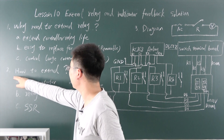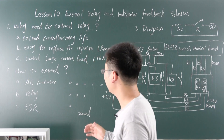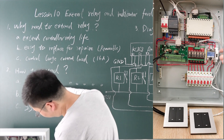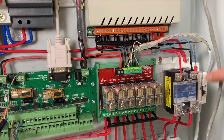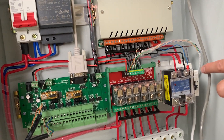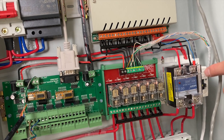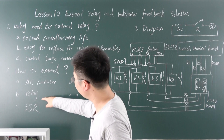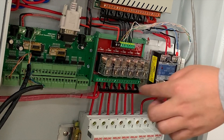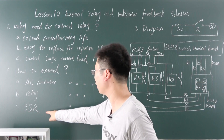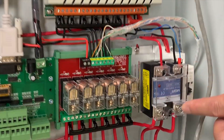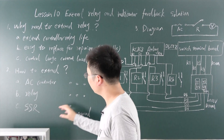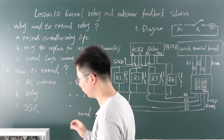Now let's look at step two: how to extend. The relay device can be extended using three types of devices. One is the AC contactor — this is a DC-controlled AC contactor that uses DC 12 volts to switch power on and off. Two is the standard removable relay, commonly used. And three is the SSR — solid state relay, here used at 20 amperes.